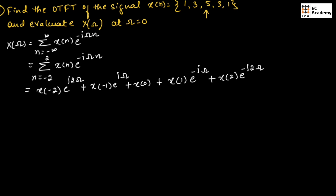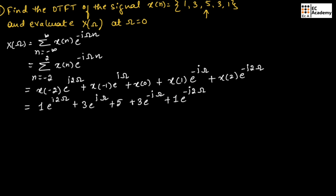Substituting those values in the equation, we get 1 exponential to the power of j 2 omega plus 3 exponential to the power of j omega plus 5 plus 3 exponential to the power of minus j omega plus 1 exponential to the power of minus j 2 omega. Rearranging, we write 5 plus exponential to the power of j 2 omega plus exponential to the power of minus j 2 omega plus 3 exponential to the power of j omega plus 3 exponential to the power of minus j omega.